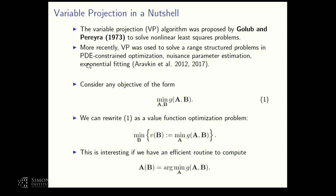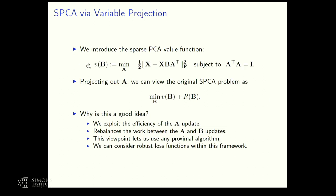As a quick recap: variable projection is an algorithm from the 1970s, mainly used to solve nonlinear least squares problems, and more recently applied to PDE-constrained optimization and exponential fitting. The idea is to rewrite the objective as a value function optimization problem, which is efficient when A can be computed with a closed-form solution. We recast sparse PCA as a value function and project out A to arrive at a new problem formulation.